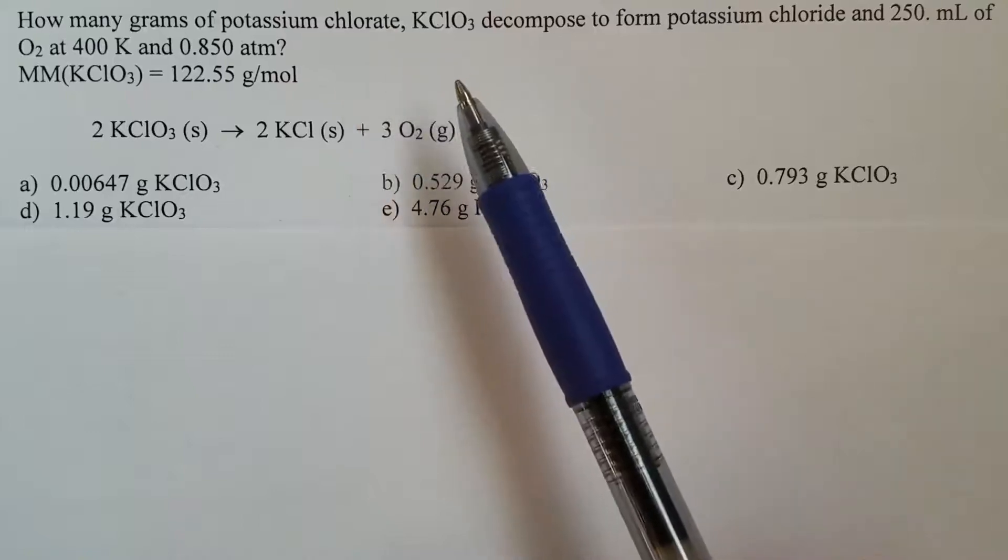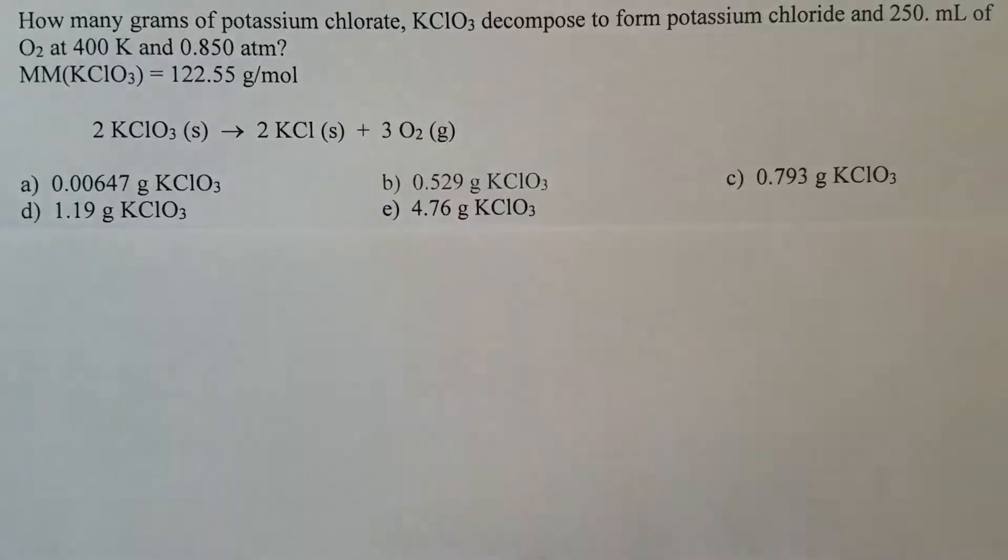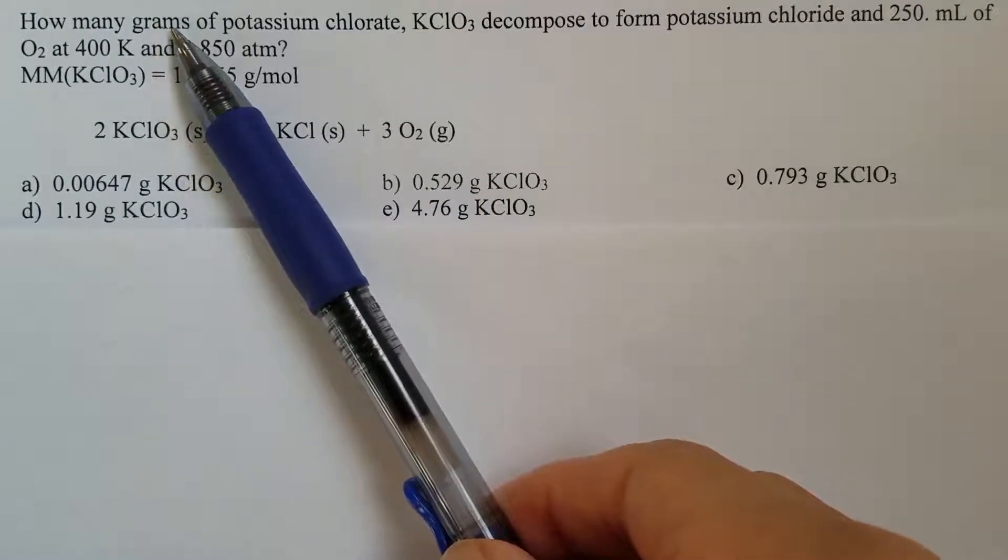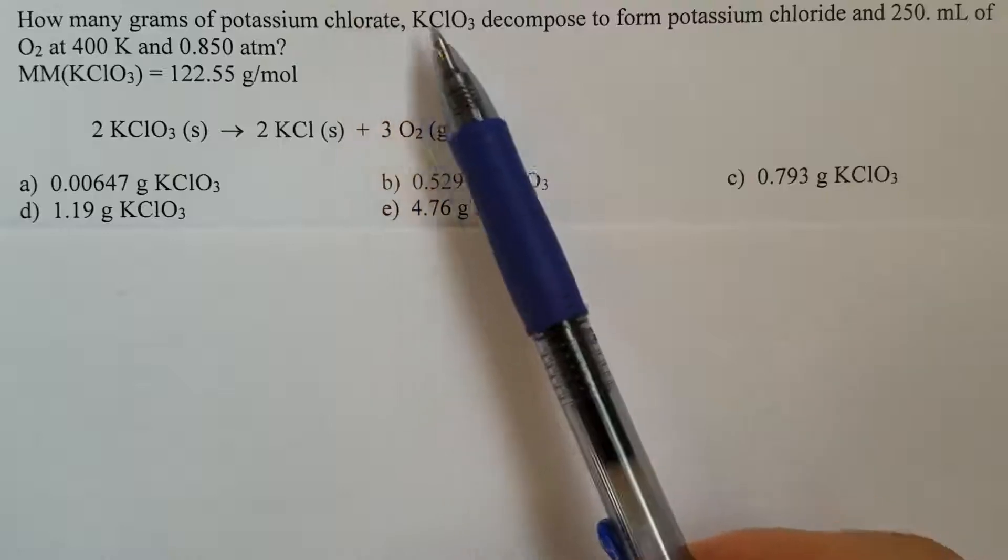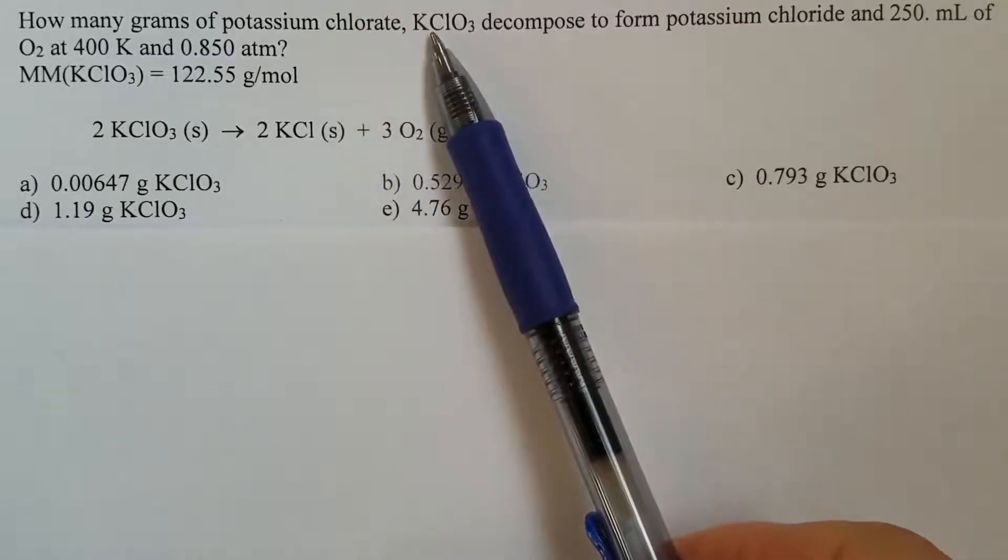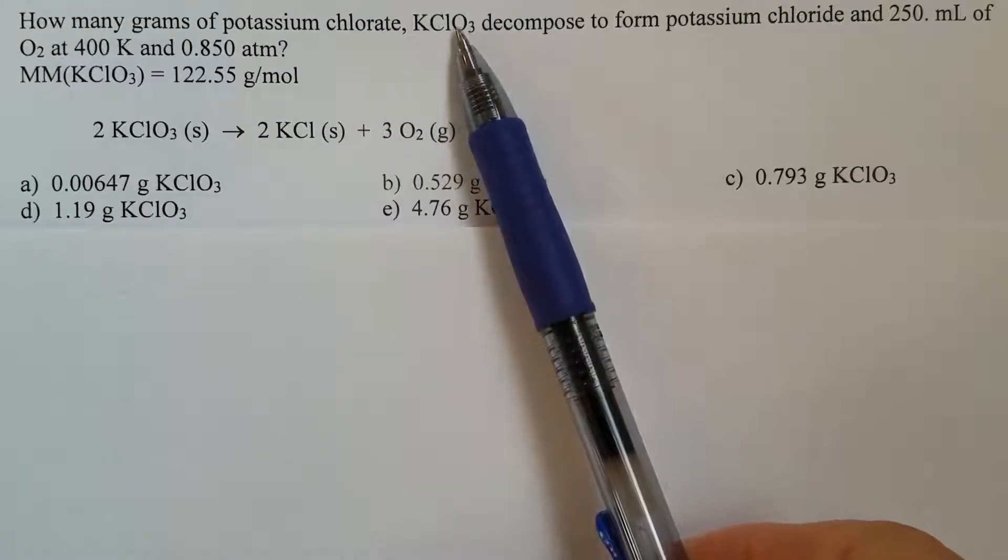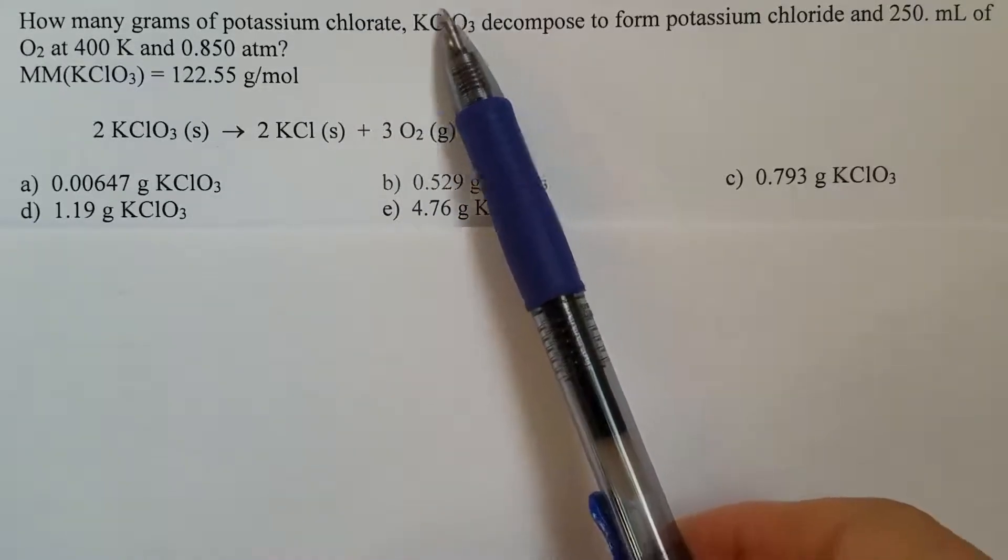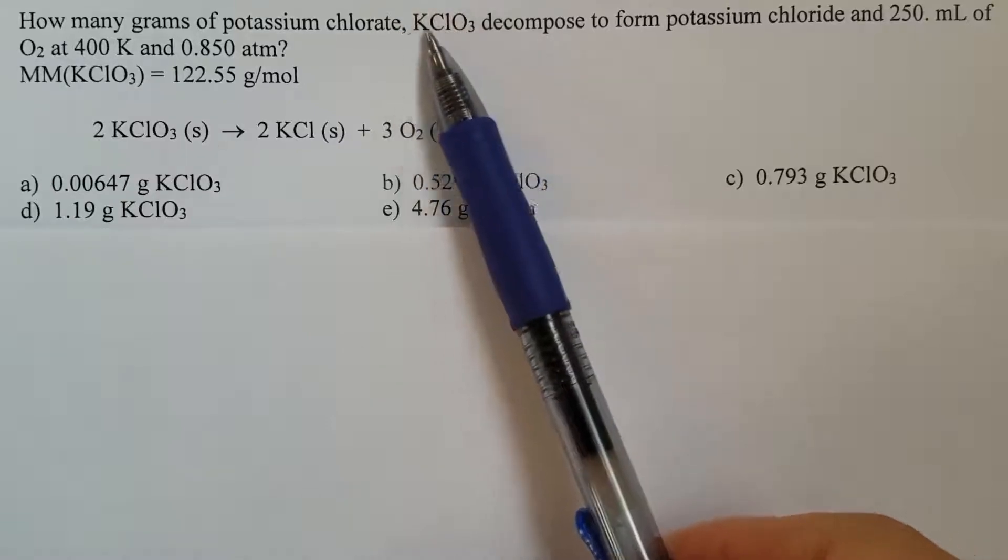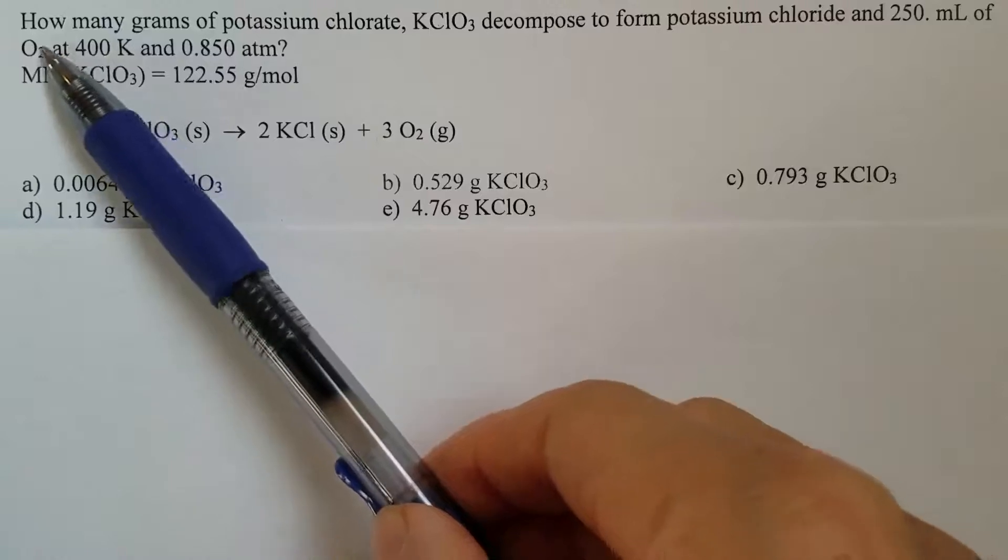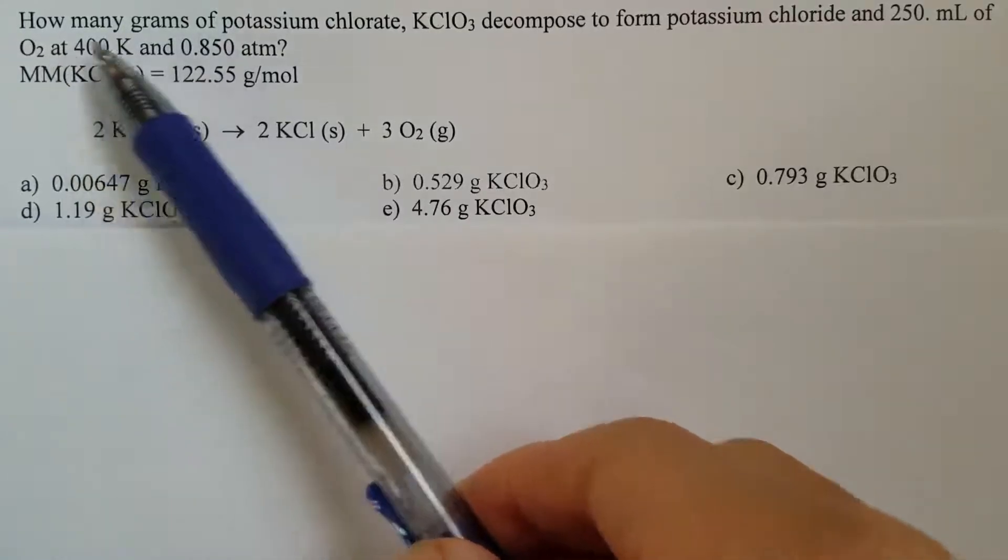This is a gas stoichiometry problem. In order to find out the grams of potassium chlorate, first we need to find out the moles of potassium chlorate. In order to find out the moles of potassium chlorate, we will need the number of moles of oxygen.